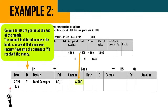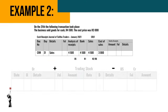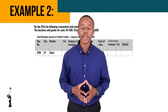Column totals are posted at the end of the month. The bank amount is debited because bank is an asset that increases — money flows into the business, we received the money. Trading stock is credited with the total of the cost of sales column in the CRJ. Trading stock is credited because it is an asset that decreases — stock leaves the business.